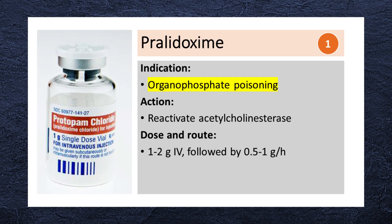Pralidoxime acts as an acetylcholinesterase reactivator and is used to treat organophosphate poisoning. It is administered intravenously with an initial dose of 1-2 grams over 15-30 minutes, followed by a continuous infusion of 0.5-1 gram per hour.